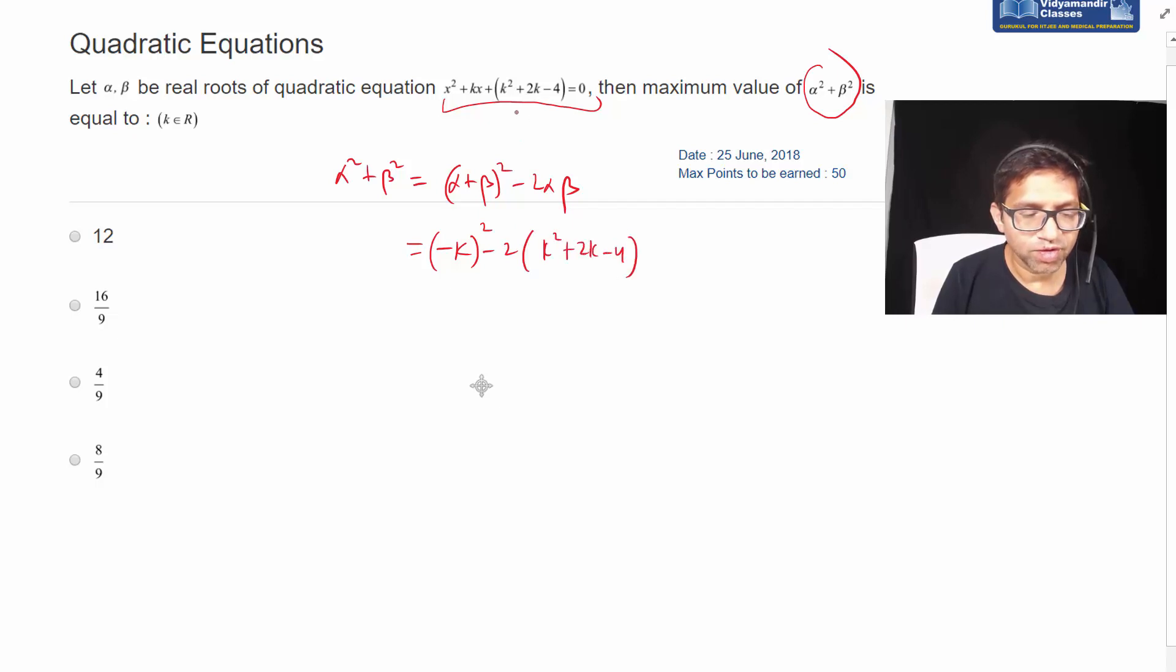So if I simplify this, this is k square, this is minus 2k square minus 4k plus 8, so now it is minus k square, right, minus 4k plus 8.